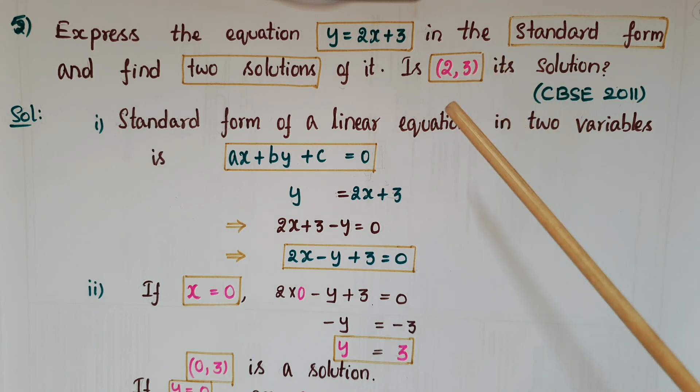We know that the standard form of a linear equation in two variables is ax plus by plus c equals 0. So write y equals 2x plus 3 in this form, then we will get 2x minus y plus 3 equals 0. This is the standard form of this equation.